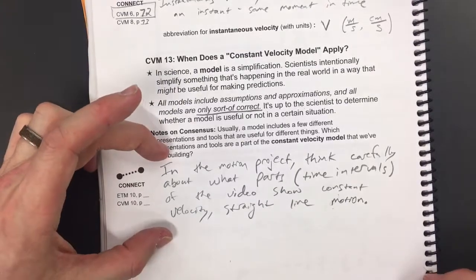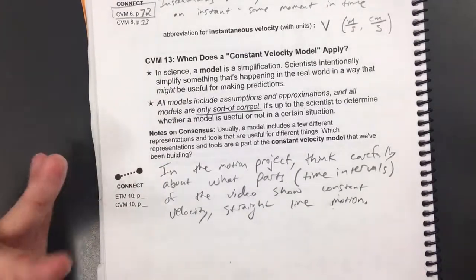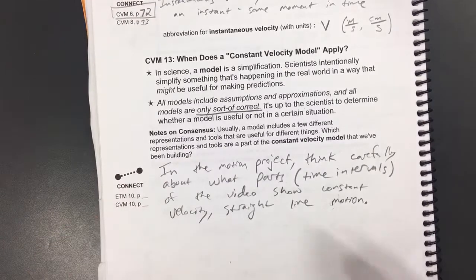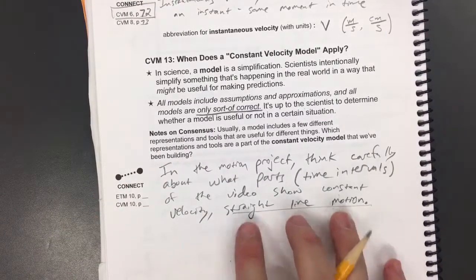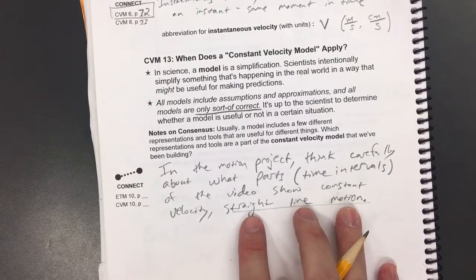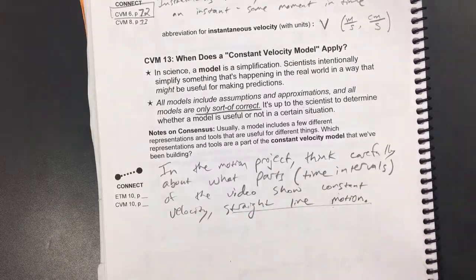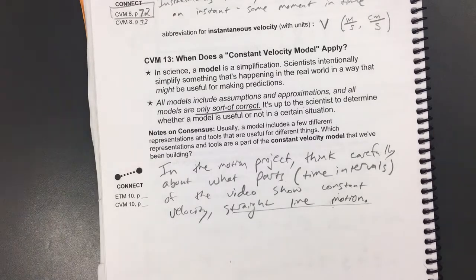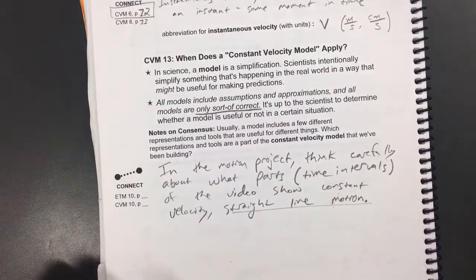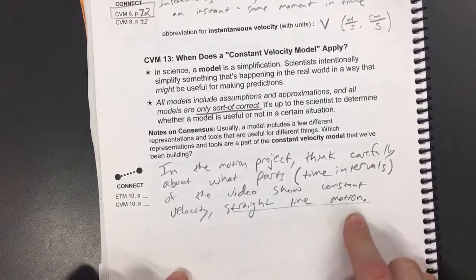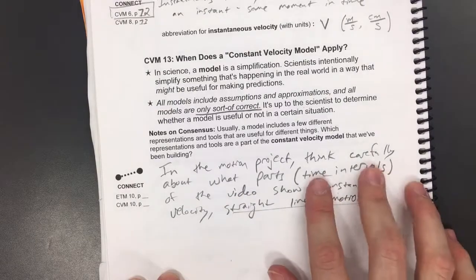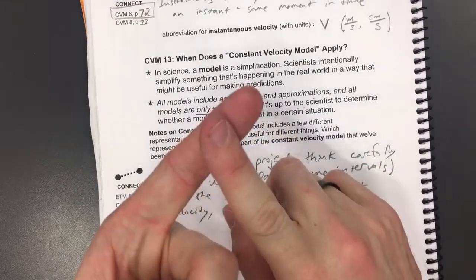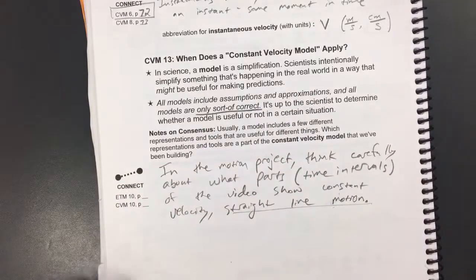We'll add more to this, but the main idea here, the thing we need to take away, is that you as the scientists choose what straight line motion means. Nothing's going to be absolutely perfectly straight because we're not dealing with perfect situations, but there will be situations that look really close to constant velocity, straight line motion, and you want to identify those spots, those time intervals, so that you can draw a trend line to them, calculate a slope, and so on.